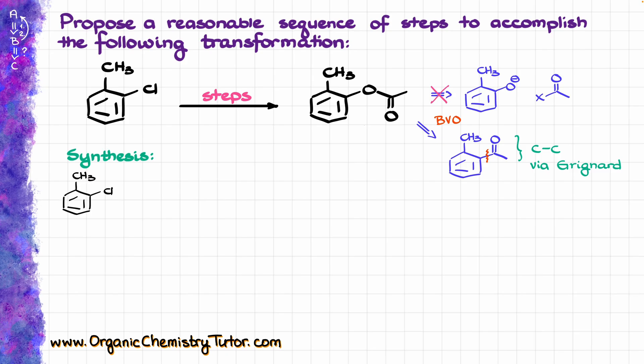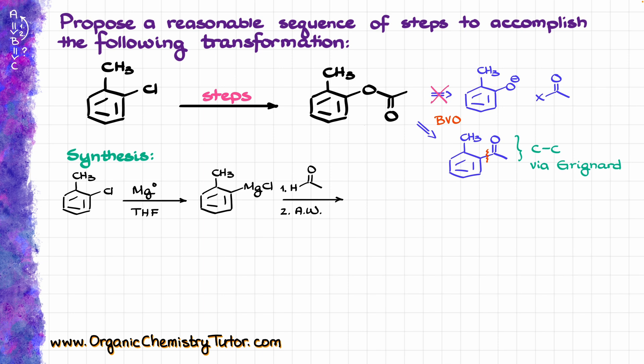I am going to start by redrawing my starting material and converting it into the corresponding organometallic — the Grignard reagent — by treating it with magnesium in the presence of THF or ether-like solvents, giving me the corresponding magnesium chloride. Now, in order to introduce my two-carbon moiety into the molecule, I'm going to perform a reaction with acetaldehyde, followed by the aqueous workup. Our organometallic compound is going to react with the electrophilic carbon of our aldehyde, giving the new carbon-carbon bond that we are looking for, which after the acidic workup is going to give us the following alcohol.